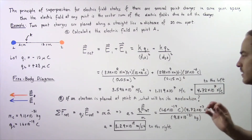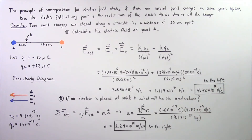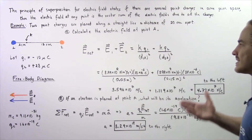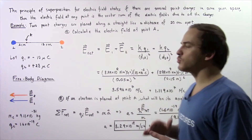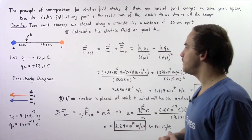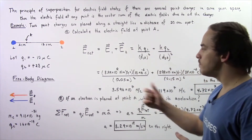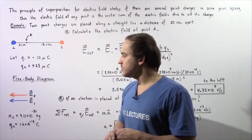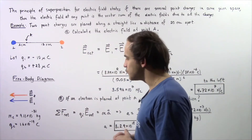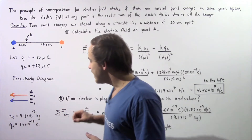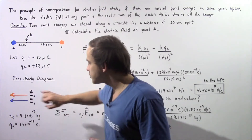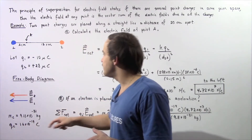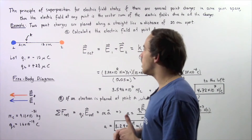In part B, if an electron is placed at point A, what will be its acceleration as a result of that net electric field? For part B, we'll use the mass of the electron and the charge of an electron as given constants.